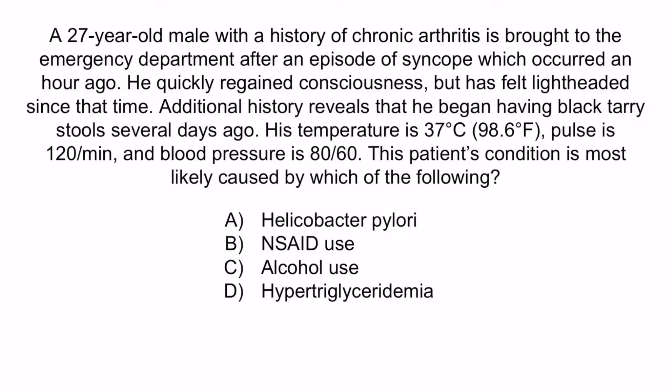So A is incorrect. C is incorrect because while high concentrations of alcohol may damage the gastric mucosal barrier, there is no evidence that alcohol causes peptic ulcer disease. D is suggestive of pancreatitis, which would present with extreme epigastric abdominal pain, not black tarry stools and hypovolemia. So D is incorrect. The correct answer is B, NSAID use. And with that, we've covered everything you need to know about H. pylori.